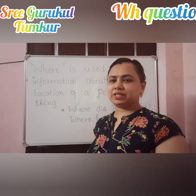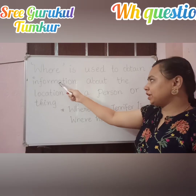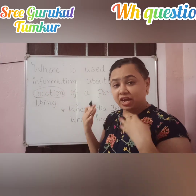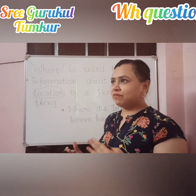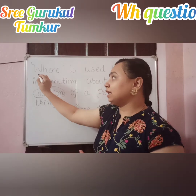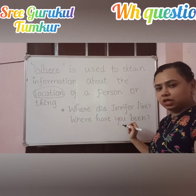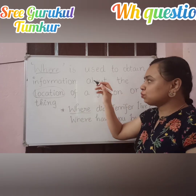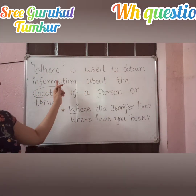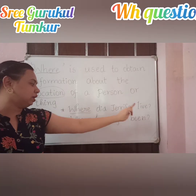The next question tag is 'where' (W-H-E-R-E). Where is used to obtain information about the location of a person or a thing — where a person is located or where a thing is located. For example, 'Where did Jennifer live?' and 'Where have you been?' So 'where' is used to obtain information about the location of a person or thing.